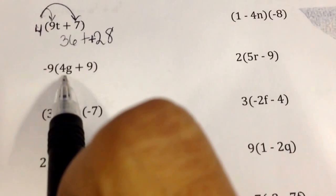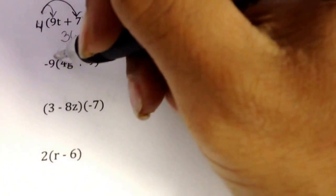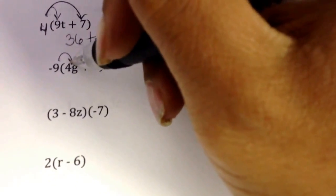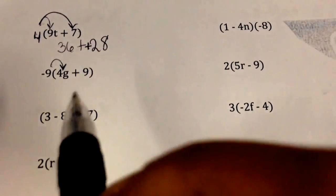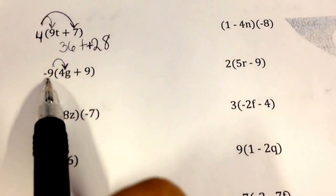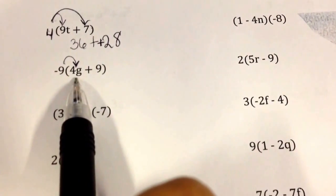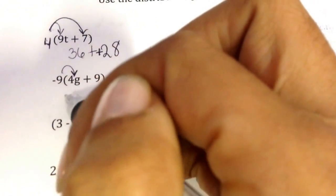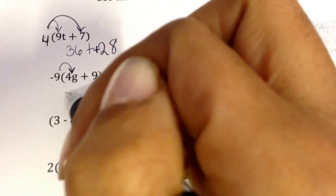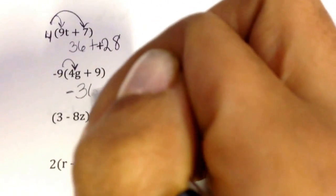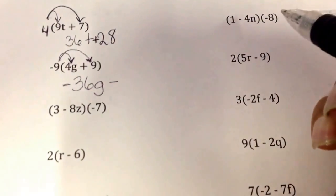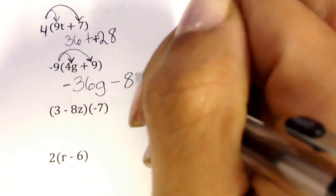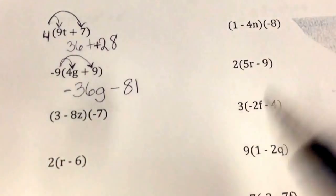This one's trickier because it has a negative number. I have negative 9 groups of 4g. If I just had 9 groups of 4g I would have 36. We haven't done a lot with negative integers, but when I have a negative times a positive I'll get a negative number. So negative 9 groups of 4g gives me negative 36g, and negative 9 groups of 9 gives me negative 81.